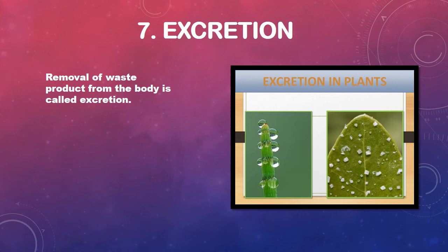The last characteristic is excretion. In very hot weather, our body produces sweat — extra salt and water come out of our body as waste. This process of removing waste from the body is called excretion. The same happens with animals and plants — plants also carry out excretion, releasing waste products.